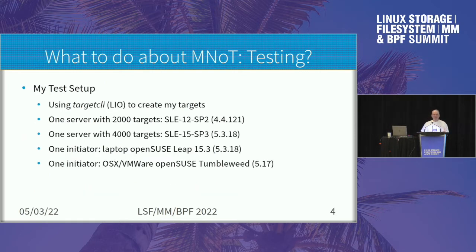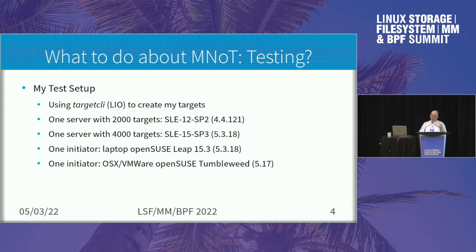So I used targetCLI to create my targets. That's the kernel target subsystem, and I created a simplistic script to do that. It didn't work out at first. I had a couple of servers — one I put 2,000 targets on, and the other one I put 4,000 targets on. So I had 6,000 targets total. I should be able to test massive numbers.